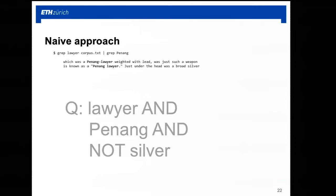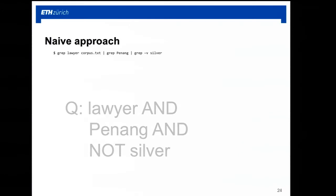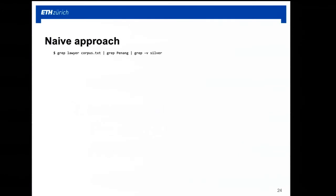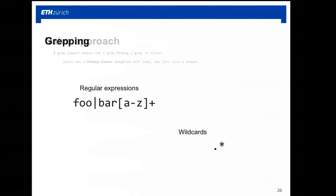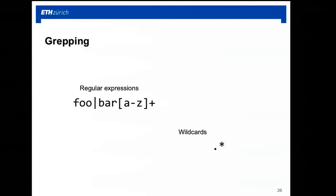You can already see some structure in the search because we take one search result with one word and filter further with another. You can also negate with dash-v and filter further. Grep even has regular expressions where you can find words you don't exactly know how to spell. This is also something we will do on larger scales. But grep has a few shortcomings, and this is where I want to wake you up.